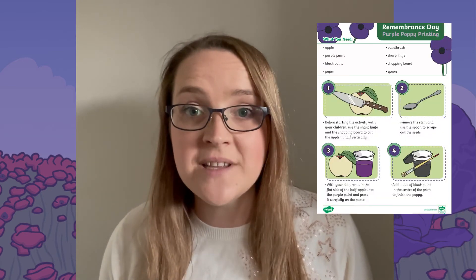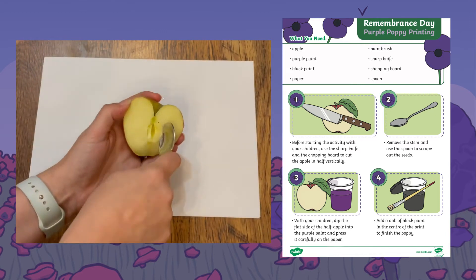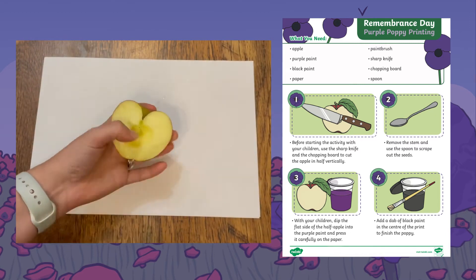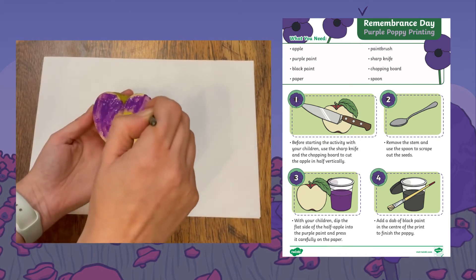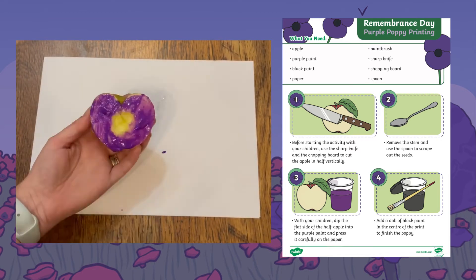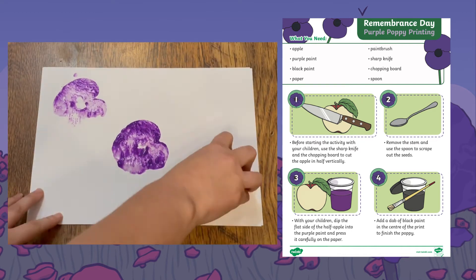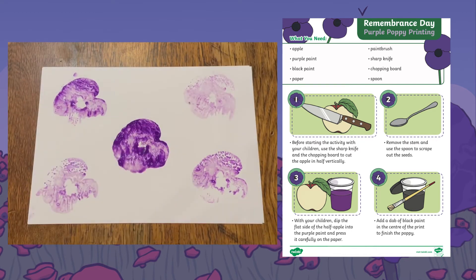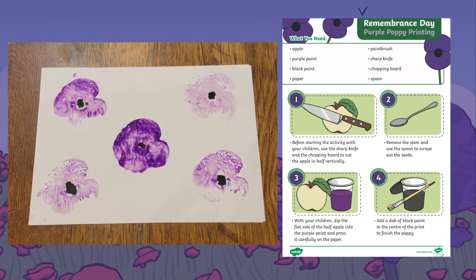After showing your children this PowerPoint, why not get them to have a go at this purple poppy printing activity. Start by cutting an apple in half and removing the stem and the seeds from the center of the apple. Then with purple paint, paint the outside of the apple, stamp onto your paper, and then draw or paint black spots.